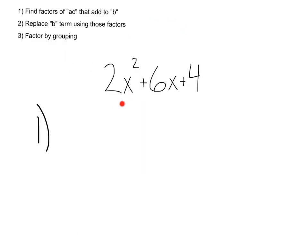Let's try this out with 2x squared plus 6x plus 4. First, 2 times 4, the factors of a times c, that's going to give us 8. And we want factors of 8 that add to your b term, 6.